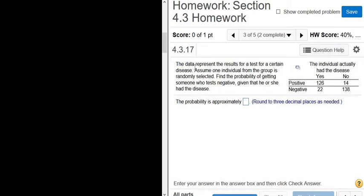The data represent the results for a test for a certain disease. Assume one individual from the group is randomly selected. Find the probability of getting someone who tests negative, given that he or she had the disease.